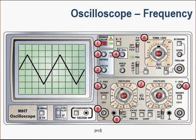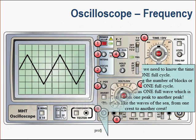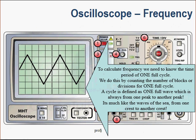To calculate the frequency of a signal, we need to know the number of divisions per cycle. A cycle is defined as from the peak of a signal to the next peak, very much like the waves of the sea from one crest to another crest. In this regard, there are five divisions.